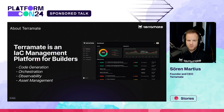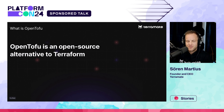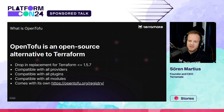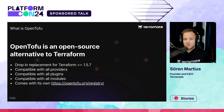So what is OpenTofu? The easiest way of explaining it in a single sentence: OpenTofu is an open-source alternative to Terraform. As of today, if you are on Terraform version 1.5.7, you can think of OpenTofu as a drop-in replacement — super easy migration with full backward compatibility to version 1.5.7 and all versions before that.